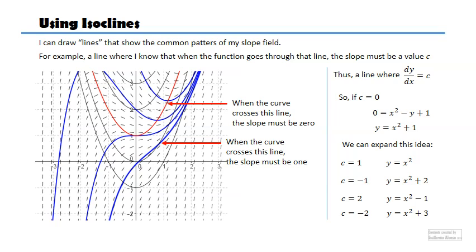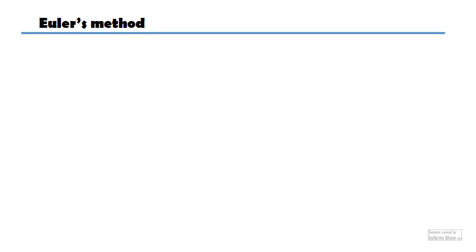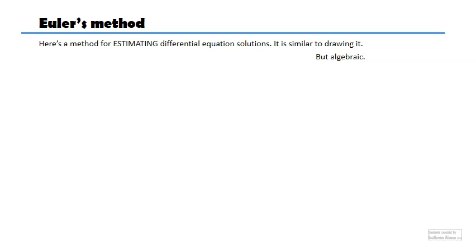So now for Euler's method — already nine minutes into the video but I think you can still hold on. Euler's method is just a way to estimate the values of differential equations. It's kind of a similar thing to what we've been doing — following the slope. You say the slope is telling me to go up, so you go up, find another slope field line, go a bit more to the right. That process is basically the same thing but rather than using the drawing, we're just going to use the algebra — the x's and y's and equals signs.